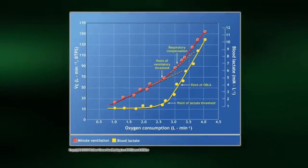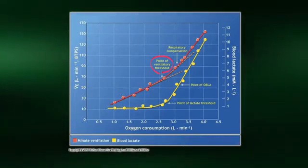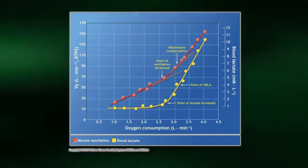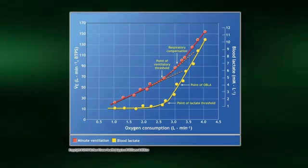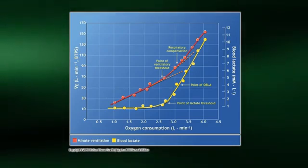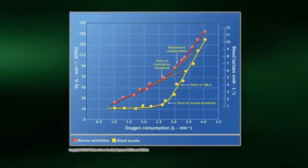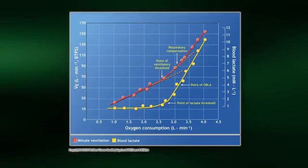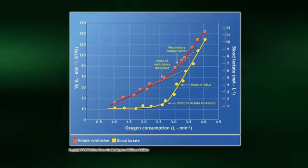During graded exercise, the generation of non-metabolic carbon dioxide will result in a ventilatory threshold shown here. Basically, the exponential increase in lactic acid production results in a large increase in non-metabolic carbon dioxide production from the buffering of the acid. This non-metabolic carbon dioxide further stimulates the ventilatory response, resulting in this exponential increase, or threshold, in ventilation. For this reason, researchers and clinicians frequently measure the ventilatory threshold via indirect calorimetry to estimate the lactate threshold.